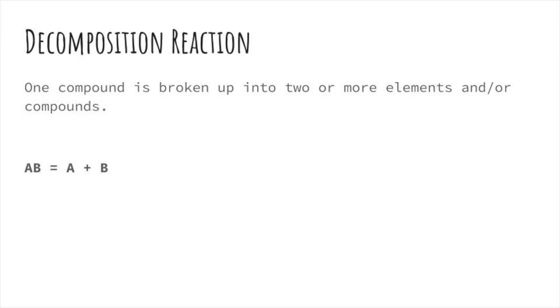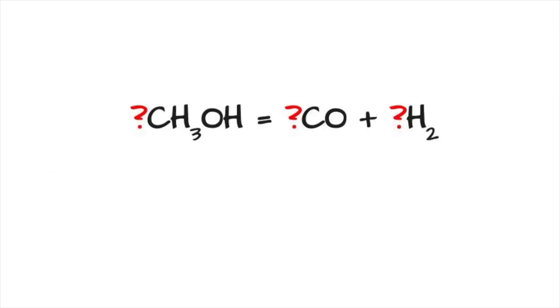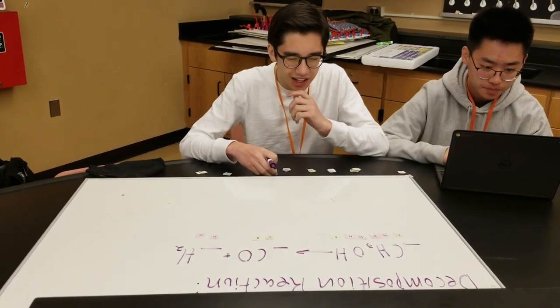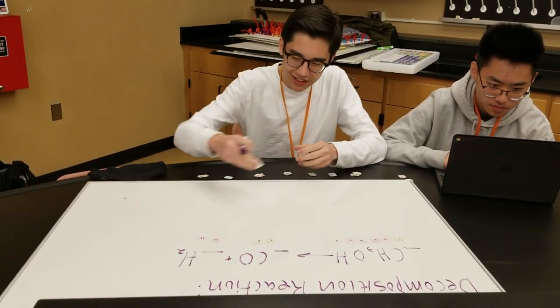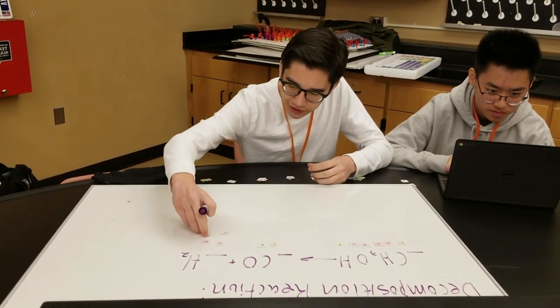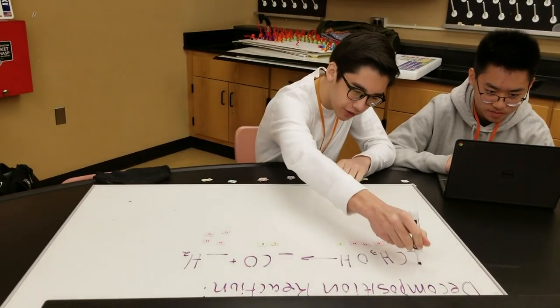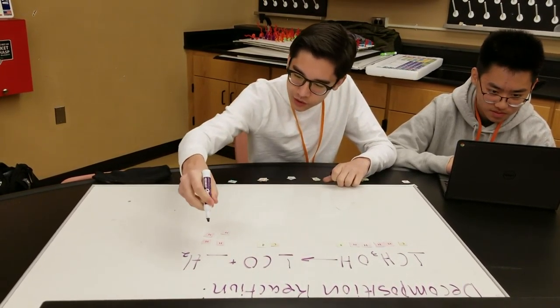Hold on. There's more. The second type of reaction is a decomposition reaction, which takes one compound and breaks it up into two or more elements and or compounds. Try balancing this out. Make sure that the number of atoms of each element is the same on both sides of the equation. Don't mess up.